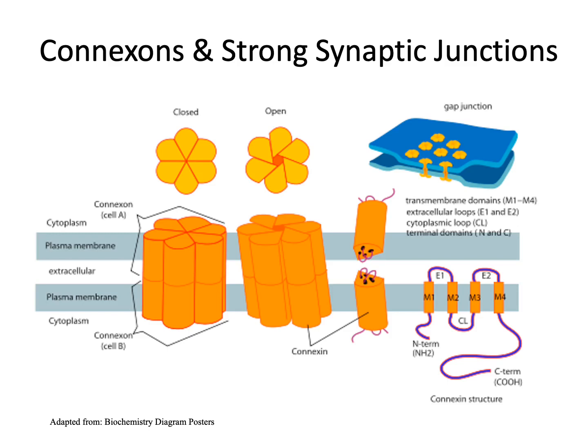The synapse is involved with exocytotic release of neurotransmitters from cell A to receptors on cell B, so as to allow for a ligand-gated response on cell B relative to the actions on cell A.